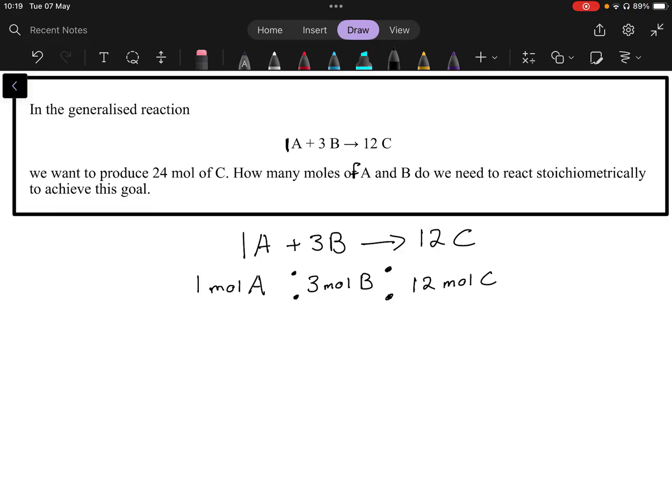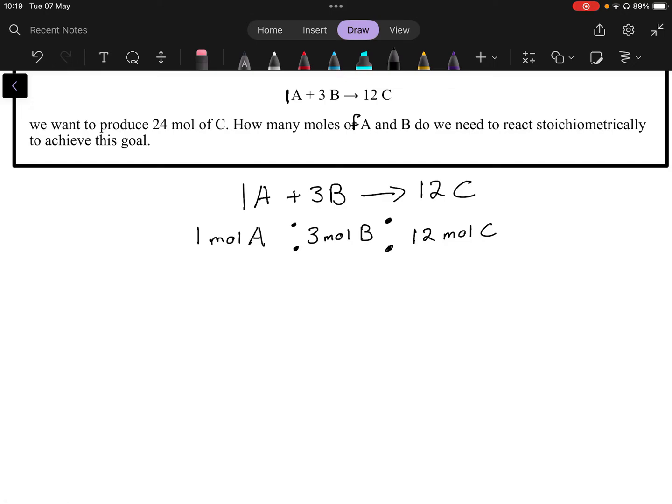So I'm going to write it out very formally in terms of how do you look at the units, the so-called units of this. So what you normally probably would have done is you would have used the cheat code and said well to get the number of moles of A you're going to say well 1 to 12 is the relationship between A and C. What we have is we want 24 mole of C, so then how many mole of A?